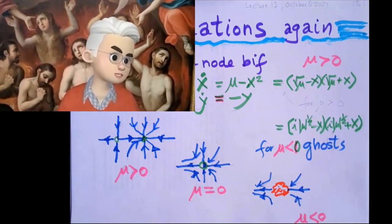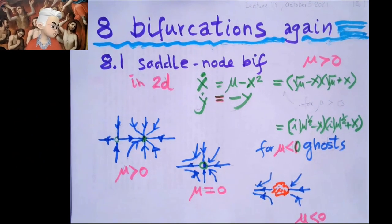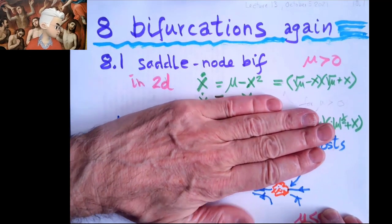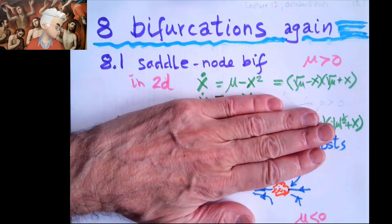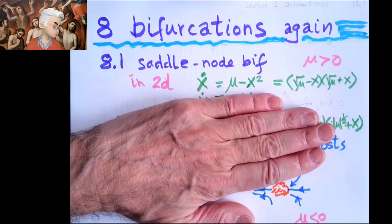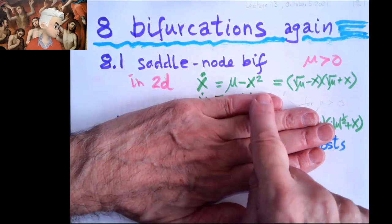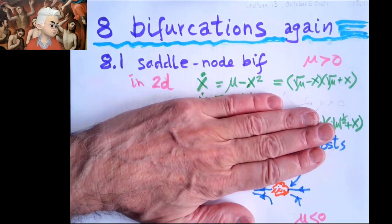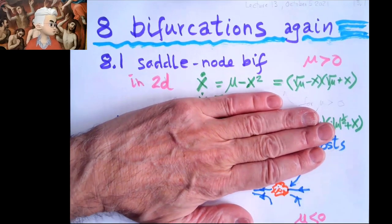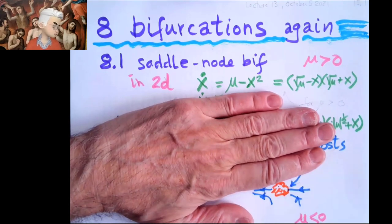So with saddle-node bifurcations, in one dimension we had the velocity along the line x, had one parameter. If velocity was positive, then when x was small, the velocity was positive, so thing could speed up. And when x was large, which was for large negative, large positive, that would slow down.